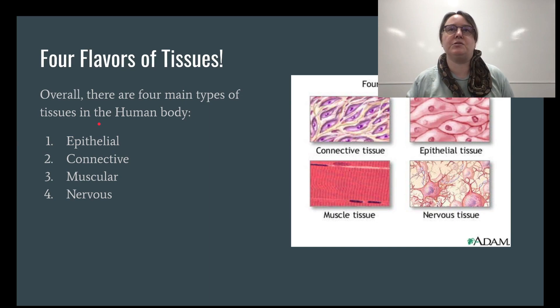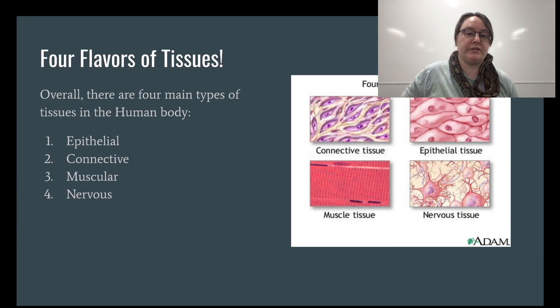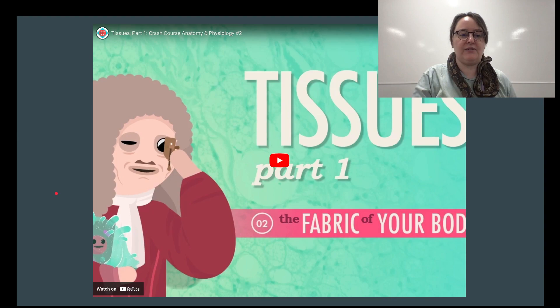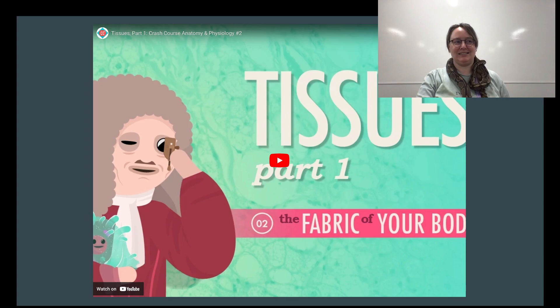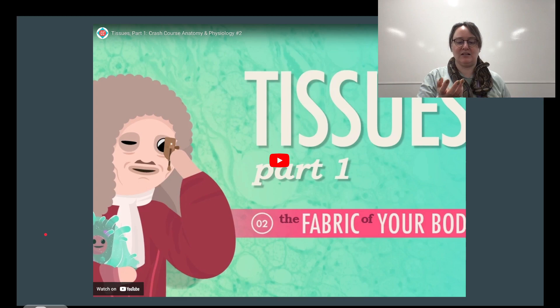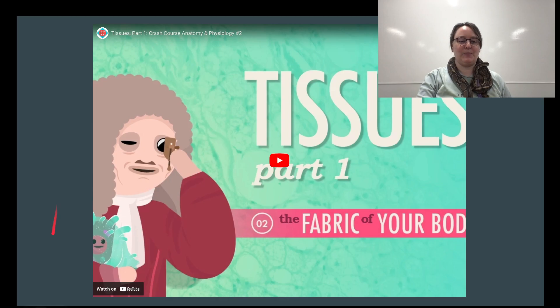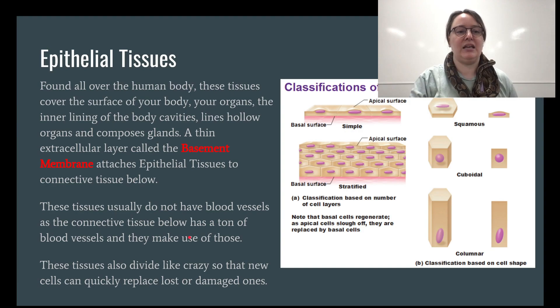Epithelial tissues line a lot of your cavities, surround your organs, and keep your organs in place. A quick historical note: Antonie van Leeuwenhoek is considered the father of modern microscopy. He discovered bacteria by looking at dental scrapings under his microscope — he called them 'animalcules' because he thought they looked like little animals. Animalcule — small animal. Very cute.